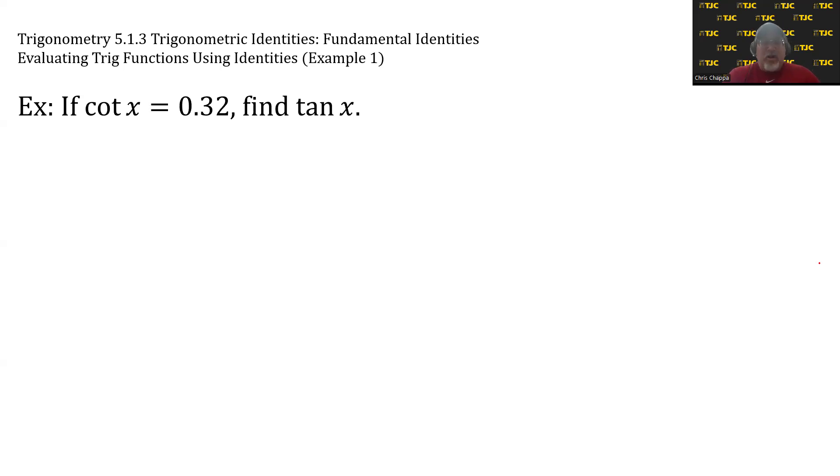But in this case, we can bypass all of that by simply finding the correct identity. The strategy in transferring the value for one trig function into the value for another trig function is to find an identity that connects the two trig functions. So, what identity relates cotangent to tangent?